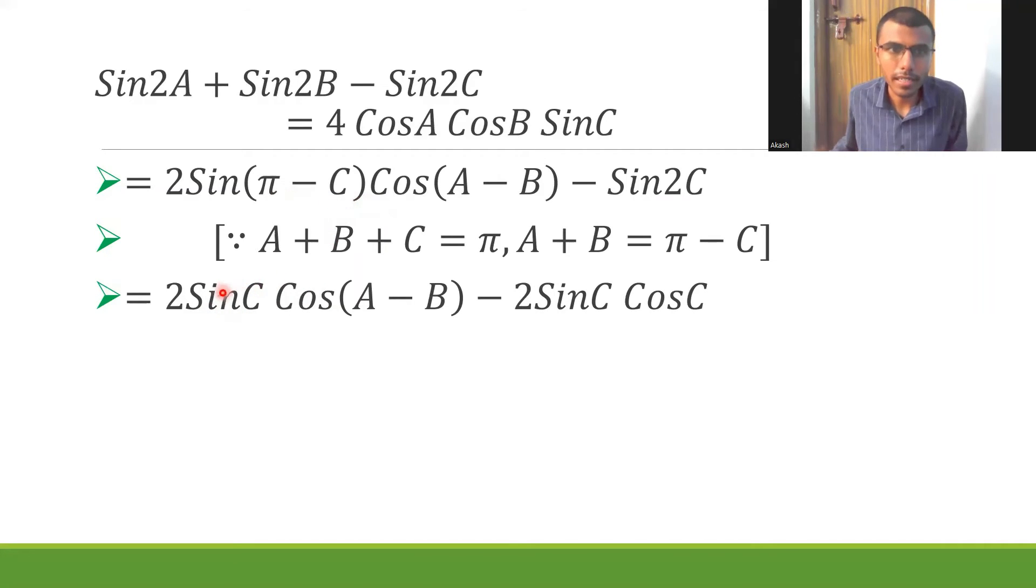Sin (π minus θ) is sin θ, so you get 2 sin C cos (A minus B). And sin 2C is 2 sin C cos C because sin 2A is 2 sin A cos A. Next, in these two terms I'm going to take 2 sin C as common. If I do so, I will have 2 sin C into cos (A minus B) minus cos C.